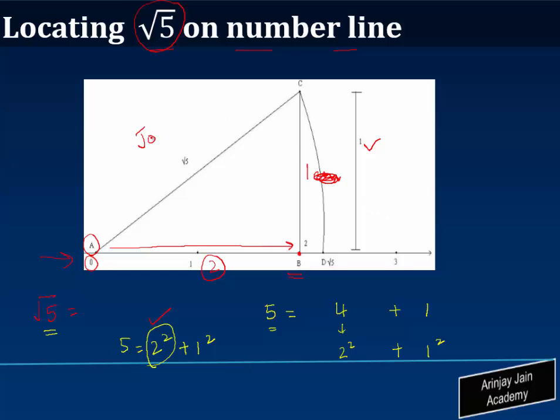Then we will join A and C. Now this is perpendicular and according to the Pythagoras theorem that you have studied earlier, what we can say is A C square, which is the hypotenuse over here, is equal to A B squared plus B C squared.